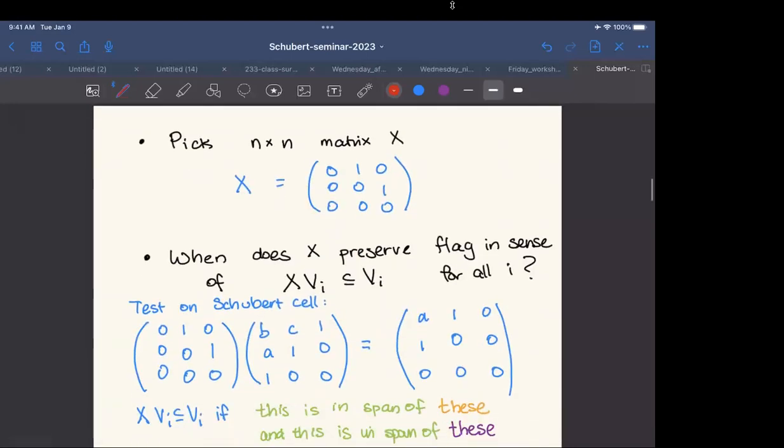For now, I'd like to move on to saying what Hessenberg varieties are. To start with, I'm just going to give you exactly the same slide that we had before. But what I would like to do, I'm still going to pick this n by n matrix X, but instead of asking whether X preserves the flag, sending VI to VI, I am going to broaden this condition. I'm going to say that X sends VI into VH of I, where H is going to be some function on the indices.